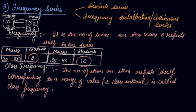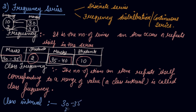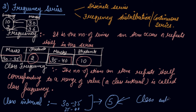30 to 35 is your class, and the count for that class is your class frequency. The other term is the class interval. For example, the classes are 30 to 35, then 35 to 40. The difference between them is 5, so 5 is your class interval. So here we have learnt about frequency, class frequency, and class interval.